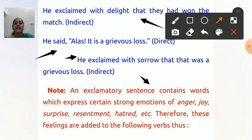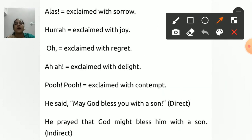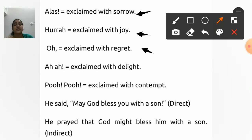An exclamatory sentence contains words which express certain strong emotions — anger, joy, surprise, resentment, hatred — so these feelings are added accordingly. For 'hurray' use 'exclaimed with joy' or 'exclaimed with delight'. For 'oh' use 'exclaimed with regret'. For 'aha' use 'exclaimed with delight'. For 'fool' use 'exclaimed with contempt'.